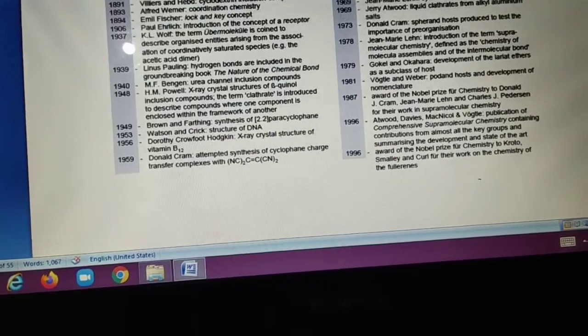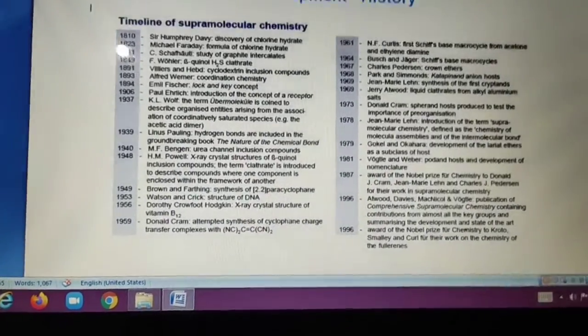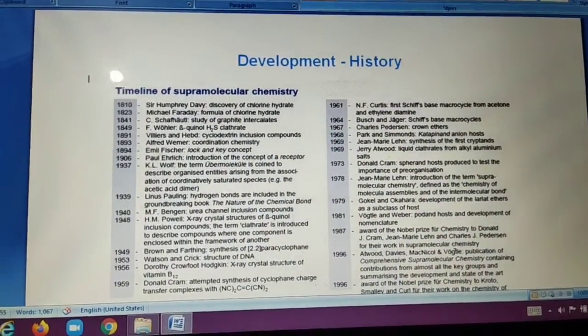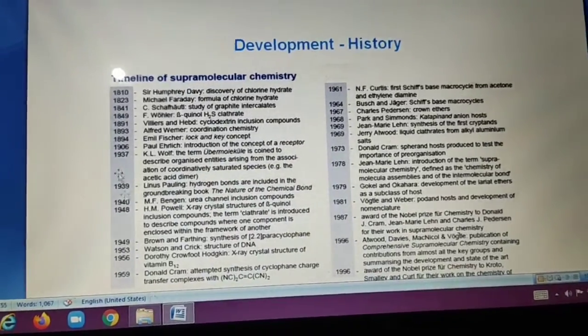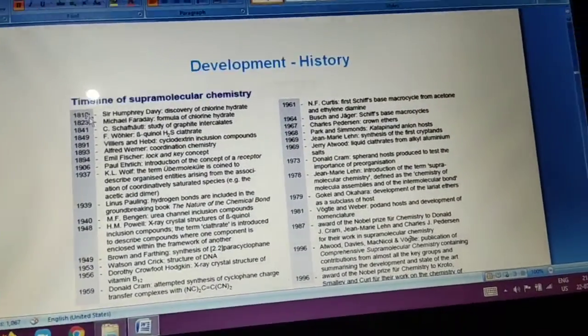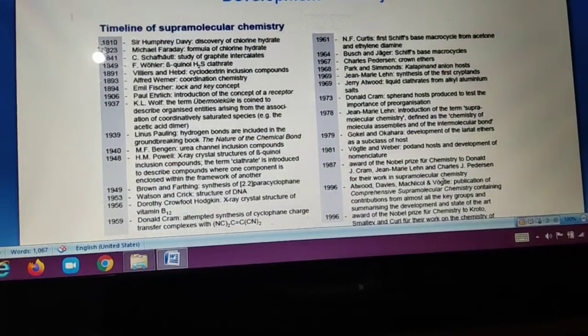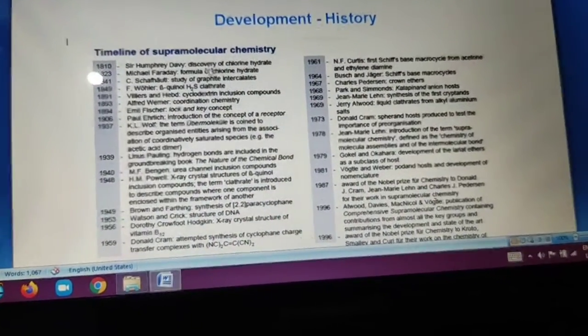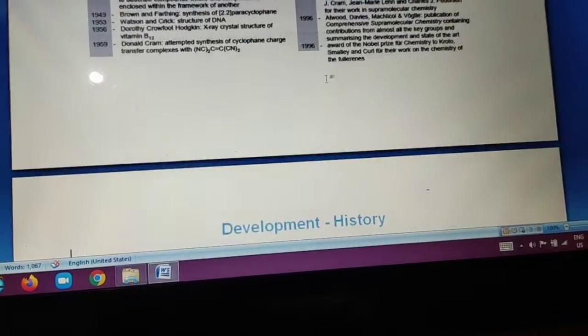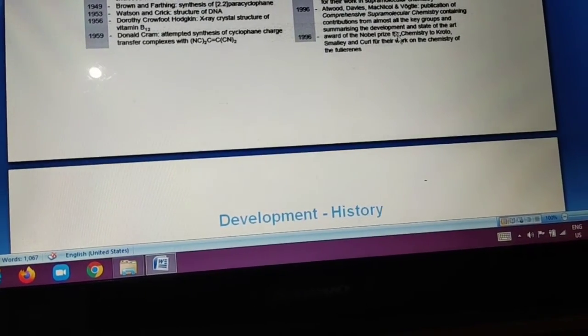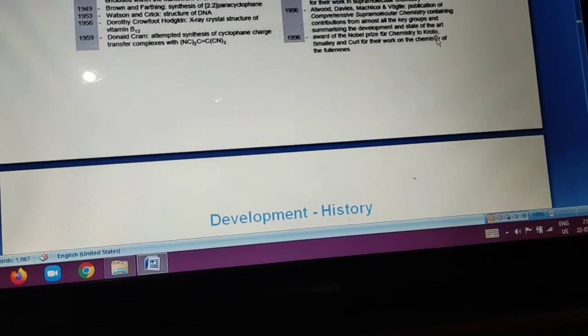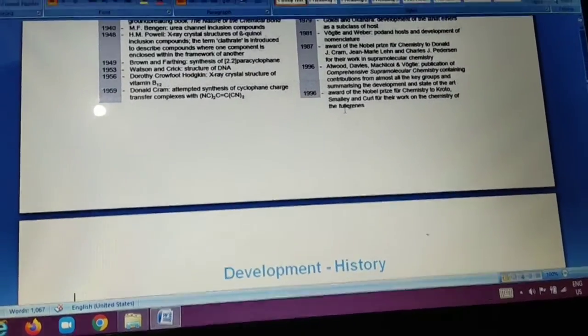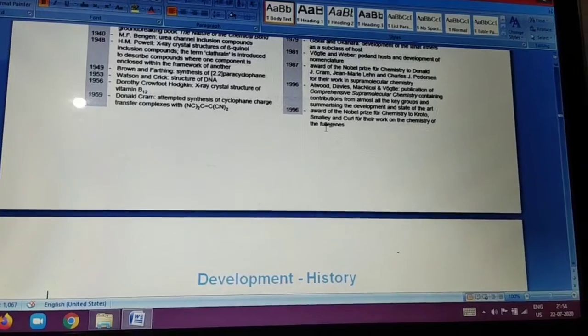Now we discuss history. Developed history. According to year development in supramolecular chemistry. Starting from 1810 Sir Humphrey Davy. Discover of chlorine hydrate. Starting from it. And 1996 award of the nobel prize. Chemistry to Kroto, Smalley and Curl for their work on the chemistry of the fullerene. Fullerene is also a big molecule.